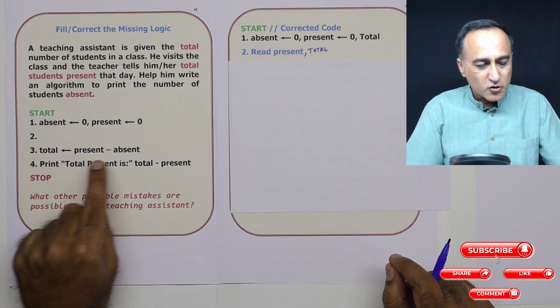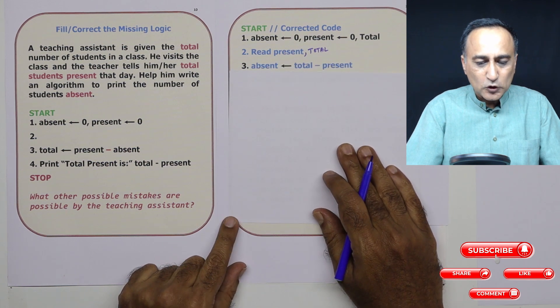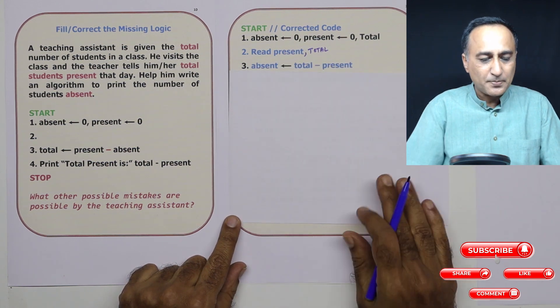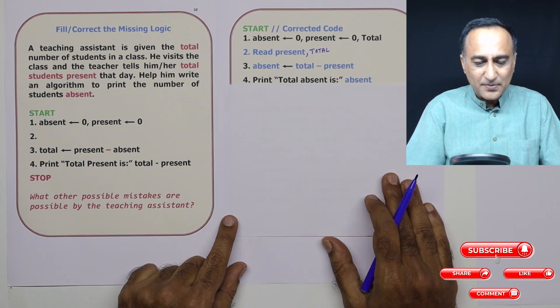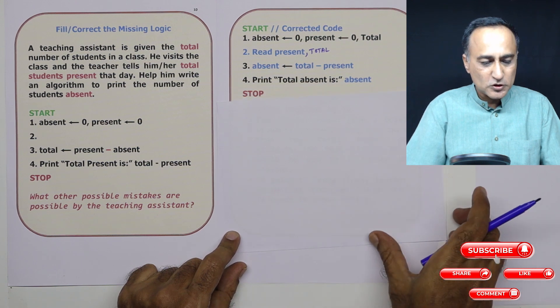Then this is wrong, he should be actually calculating the absent. So absent is total minus present. And finally, the last step total absent is just the value absent and then you stop.